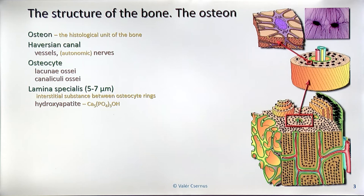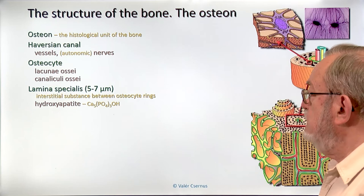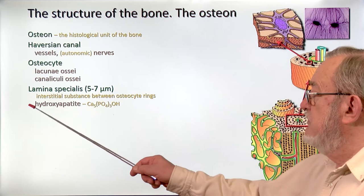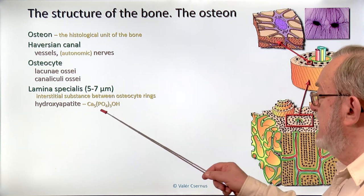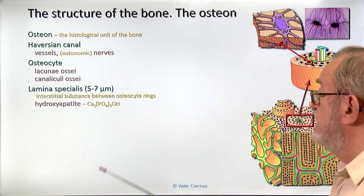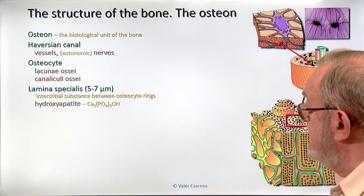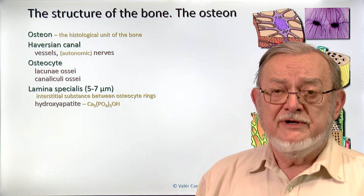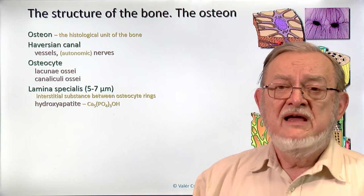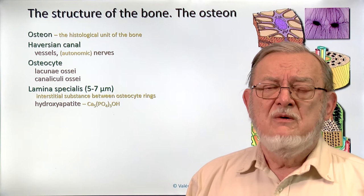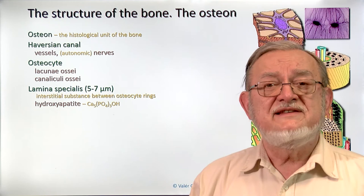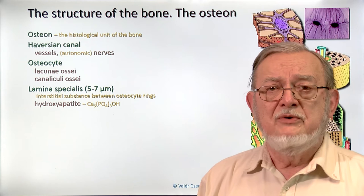What components are in the intercellular substance? The most important and most characteristic component is calcium phosphate — a complex precipitated chemical which is identical in crystal form to hydroxyapatite. Calcium, as you know from inorganic chemistry, can have different crystal forms — about 15 different crystal forms — and the mineral hydroxyapatite is exactly the crystal form found in our bone.